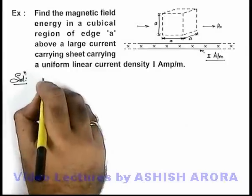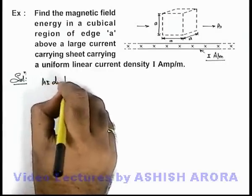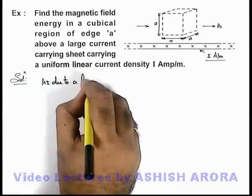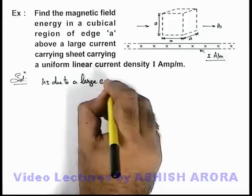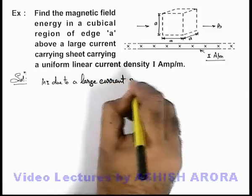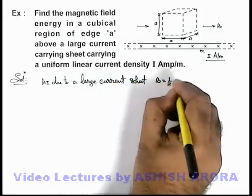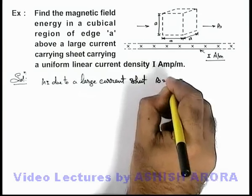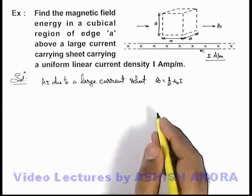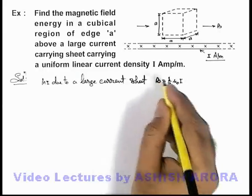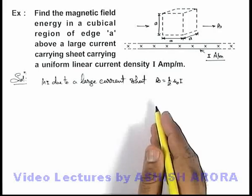We know that magnetic induction due to a large current sheet is given as B equals half μ₀I, where I is the linear current density. This we already studied by using Biot-Savart's law. This can be calculated by Ampere's law also.